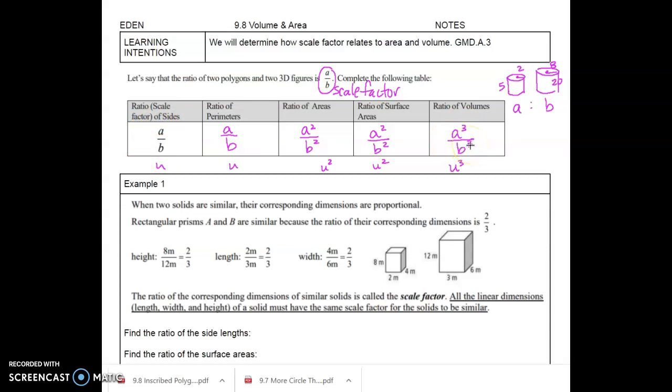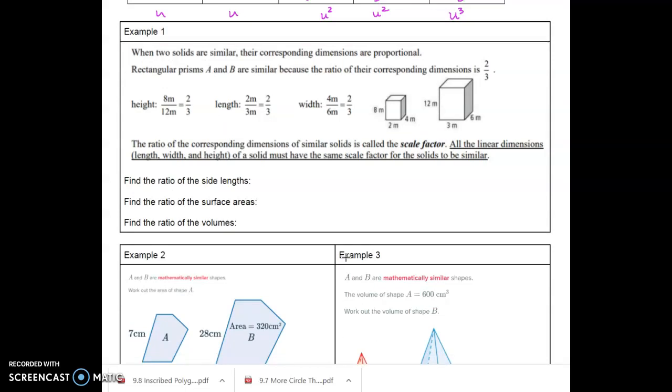And so we won't necessarily be able to set up some proportions, but we can use these scale factors to find missing measurements. It really just depends on how it's asked. And there's lots of different ways that this is applied. All right, so let's look at example one. It says, let's say we have these two cubes, rectangular prisms, and we've got A and B, and they tell you that the ratio of the sides is 2 to 3.